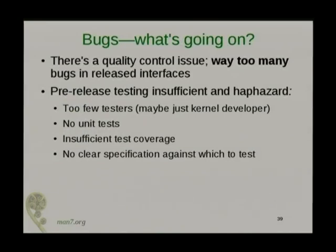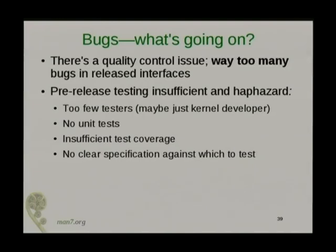So what's going on? I think there's a pretty significant quality control issue. A significant proportion of interfaces go out the door and they're buggy, even in the stable kernel. There's not enough people doing testing. Unit tests are something for Java programmers, aren't they? There's insufficient test coverage. And perhaps most tellingly, there's no clear specification of what to test against. Someone comes along, codes the new interface and puts it out there, and they think they know what the interface is supposed to do — but perhaps no one else does, because they haven't explained what the interface does.